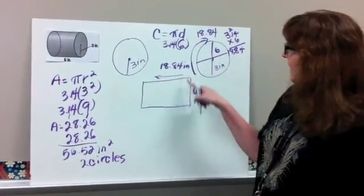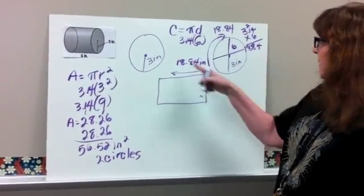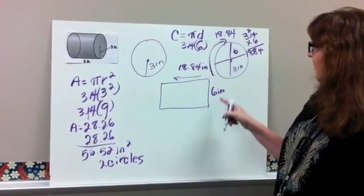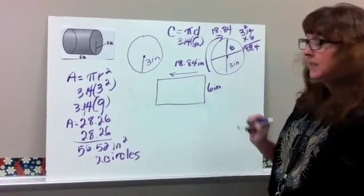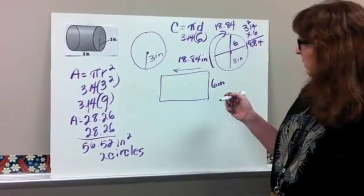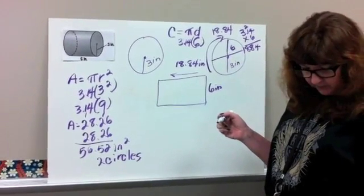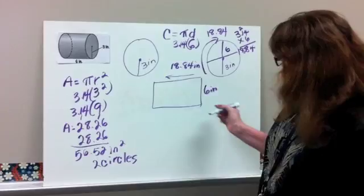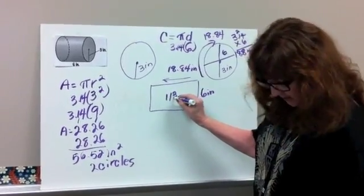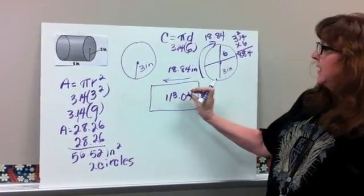Now, we need to find the area of our rectangle. So we need to multiply 18.84 times 6, base times height, to find the area of your rectangle. So when you multiply that out, you get 113.04. So there's our rectangle.